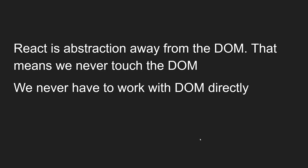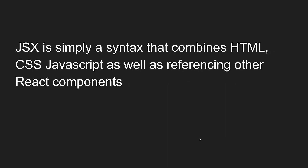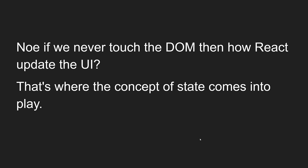We tell React how a component should look based on the current state of the data. React is an abstraction away from the DOM — by using React, we never touch the DOM directly. JSX is simply a syntax that combines HTML, CSS, and JavaScript, as well as referencing other React components.